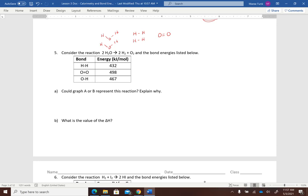So when I break the reactants bonds, I'm going to break one, two, three, four oxygen hydrogen bonds. So that's four times 467, which is 1868.